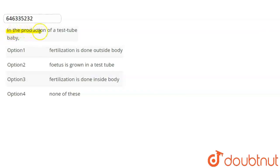Question is, in the production of a test tube baby. Fertilization is done outside the body. Fetus is grown in a test tube. Fertilization is done inside the body. And option 4, none of these.